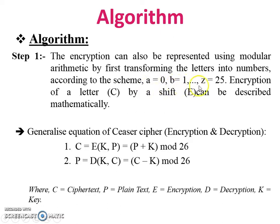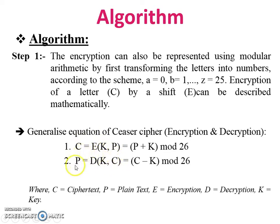The encryption can also be represented using modular arithmetic by first transforming the letters into numbers according to the scheme: A is equal to 0, B is equal to 1, and up to Z equal to 25. So first we create a table in which A = 0, B = 1, and Z = 25. Encryption of a letter by a shift can then be described mathematically.